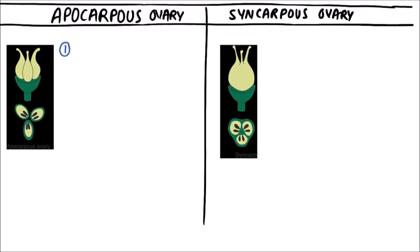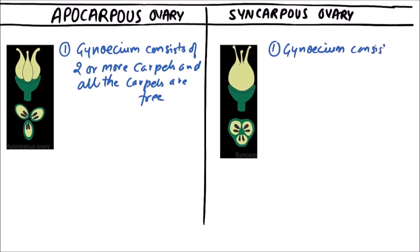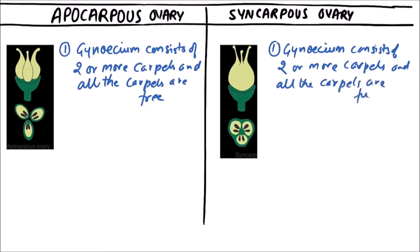In apocarpus ovary, the gynoecium consists of two or more carpels and all the carpels are free. In the case of syncarpus ovary, the gynoecium consists of two or more carpels and all the carpels are fused.